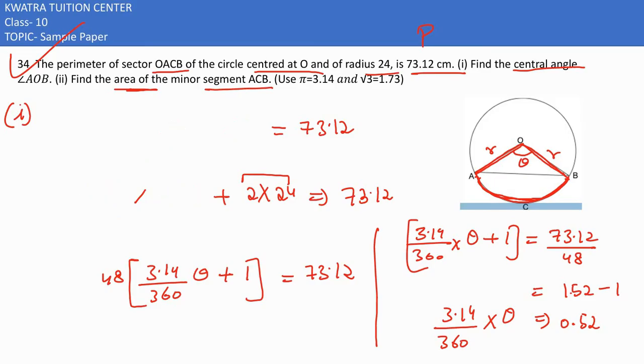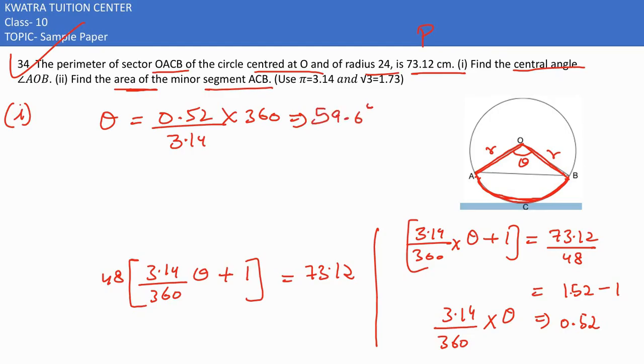In this case, theta would be 0.52 divided by 3.14 multiplied by 360. Solving this, I'm getting 59.6 degrees. So we consider it approximately equal to 60 degrees if we round off.